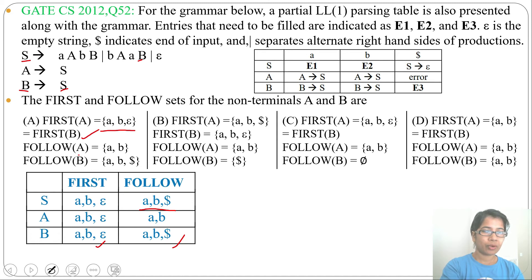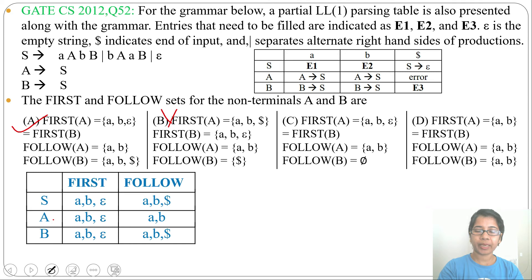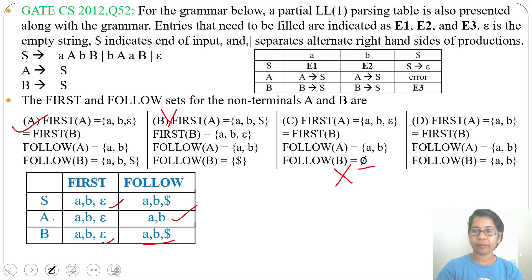Now check which option is correct. FIRST(A) = {a, b, ε} equals FIRST(B) — yes. FOLLOW(A) = {a, b} — yes. FOLLOW(B) = {a, b, $} — so option A is correct. Option B is wrong because FIRST(A) contains dollar, but dollar cannot be part of FIRST — dollar is part of FOLLOW, and epsilon can be part of FIRST. Option C is wrong because FOLLOW(B) should be {a, b, $}, not just {a, b}. Option D is wrong because FIRST(A) is {a, b, ε}, not just {a, b}.